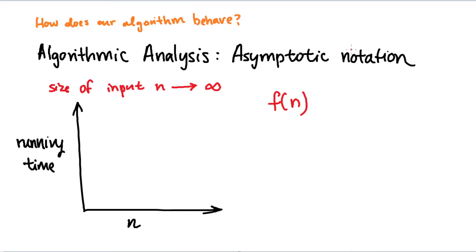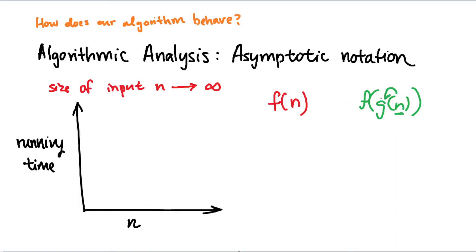If you're unfamiliar with function notation, this f here names your function and this n, whatever is in the parentheses, essentially represents a given input. You can also put a function inside a function, such as f of g of n — basically we're taking n, plugging it into g of n, taking that output, and plugging it into f of n. That's the general concept behind function notation.